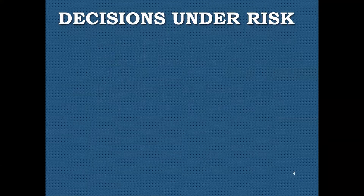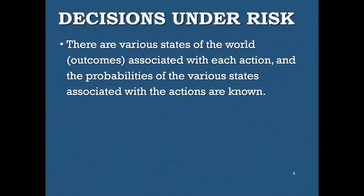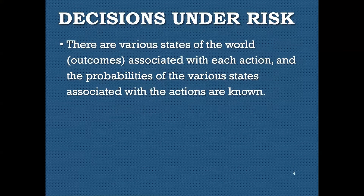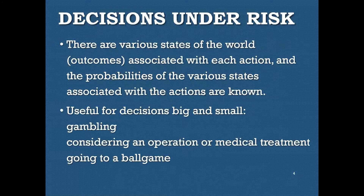Let's look at decisions under risk. First, there are going to be various states of the world or outcomes associated with each action. You're faced with a choice — you can do one of two things, though you could extend this to three or four options as well. For each of those actions, you know there are certain possible outcomes. In decisions under risk, you also have probabilities — the probabilities of the various states associated with the outcomes for each given action are known. You're faced with a choice: Option A or B. You know the probabilities of what will happen with A and with B.